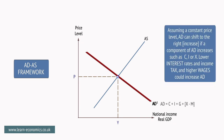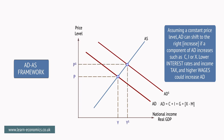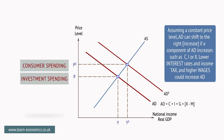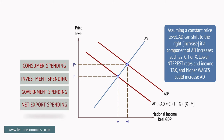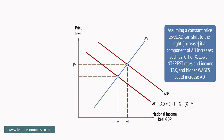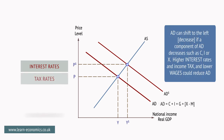Assuming a constant price level, AD can shift to the right — an increase — if a component of AD increases. This could include increases in household consumption, investment, government spending, or exports. Each of these is determined by many factors. For example, household spending is affected by real wages, unemployment levels, consumer confidence, and interest rates. Lower interest rates and income tax, and higher wages, could all increase AD.